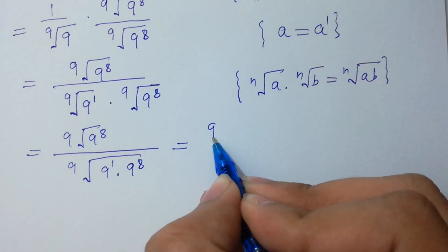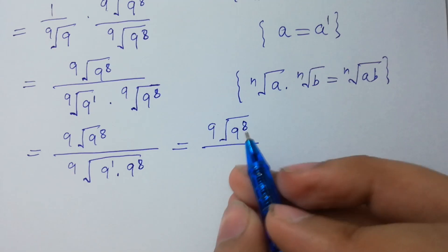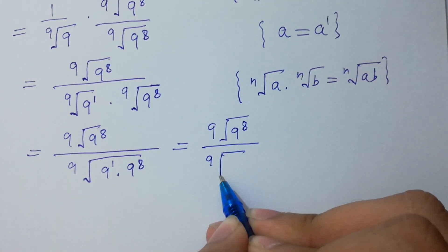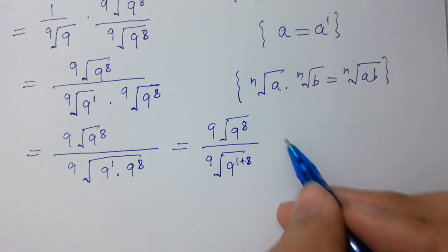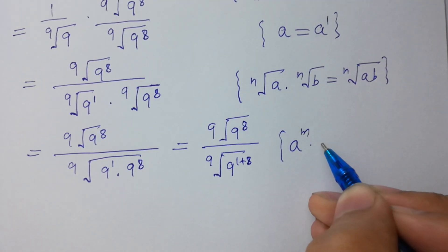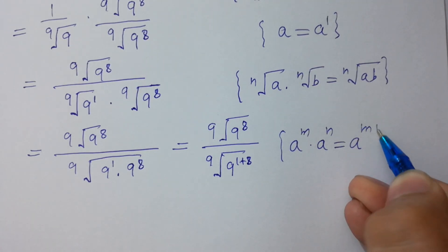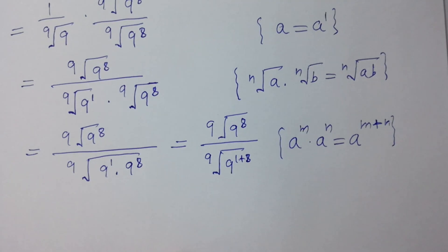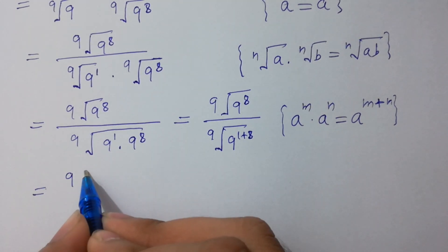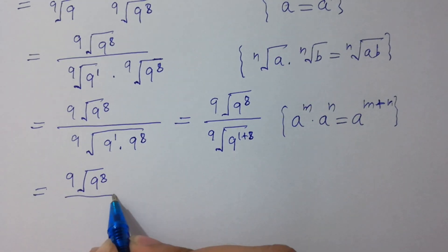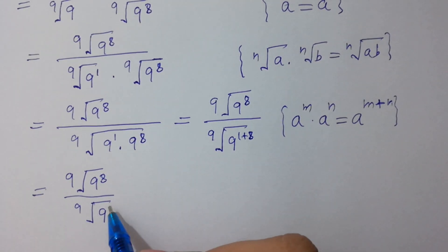9th root of 9 to the power 8, divided by 9th root of 9 to the power 1 plus 8. Since powers add — a to the power m times a to the power n equals a to the power m plus n — so 9th root of 9 to the power 8 over 9th root of 9 to the power 8 plus 1, which equals 9.